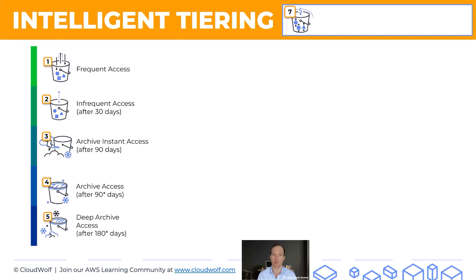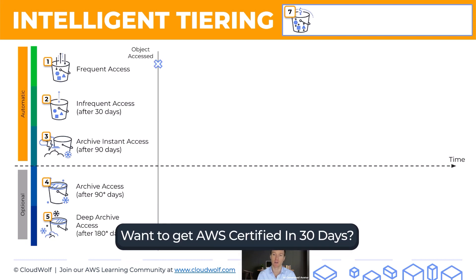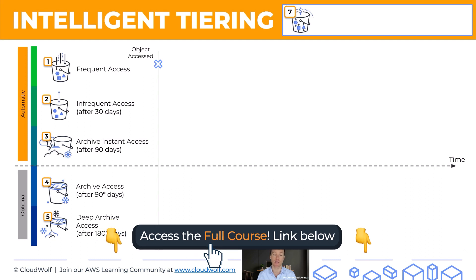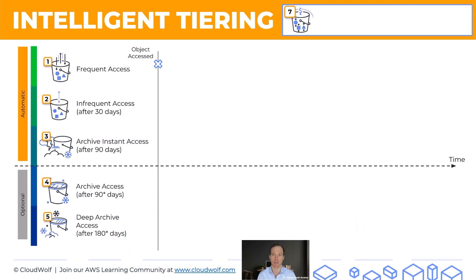The top three tiers are called automatic, and we'll see why in a second, and the bottom two are optional. If we put a timeline here and imagine that we have an object that is most recently accessed at the start, this is how intelligent tiering will deal with this object.